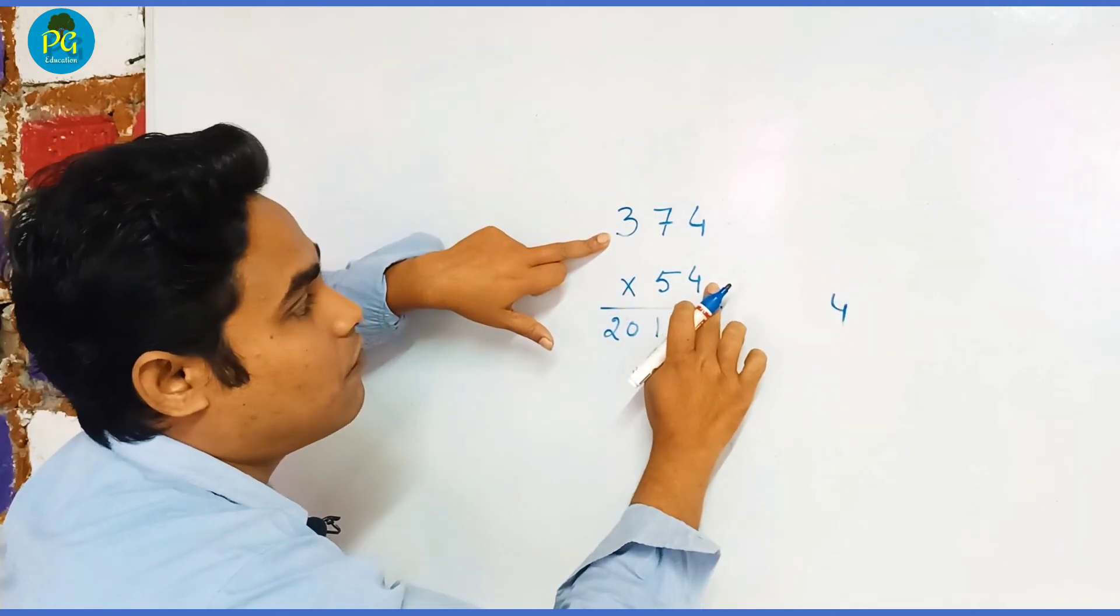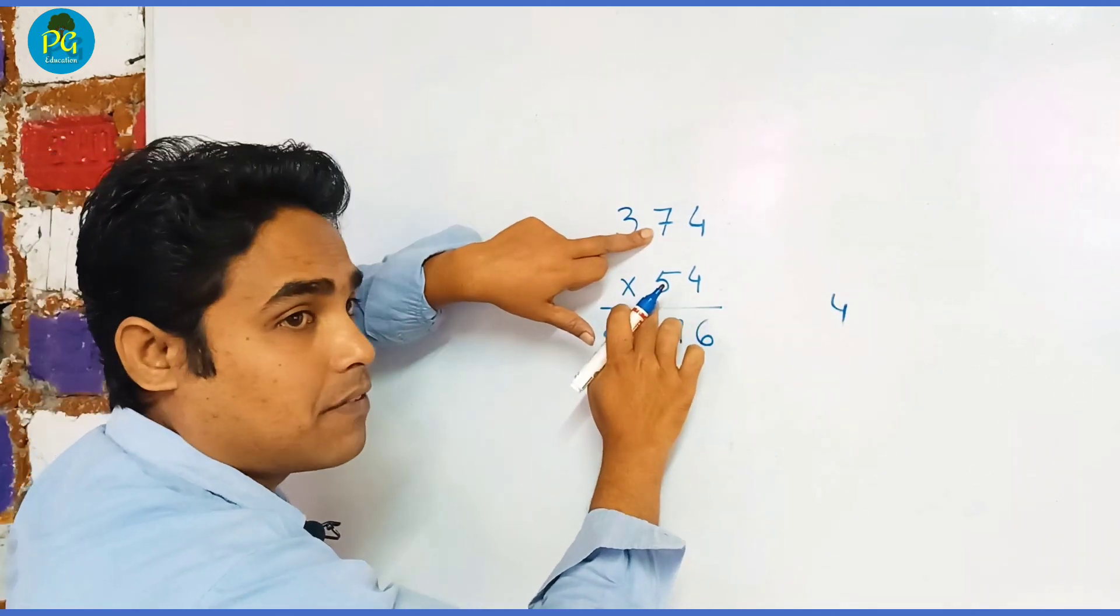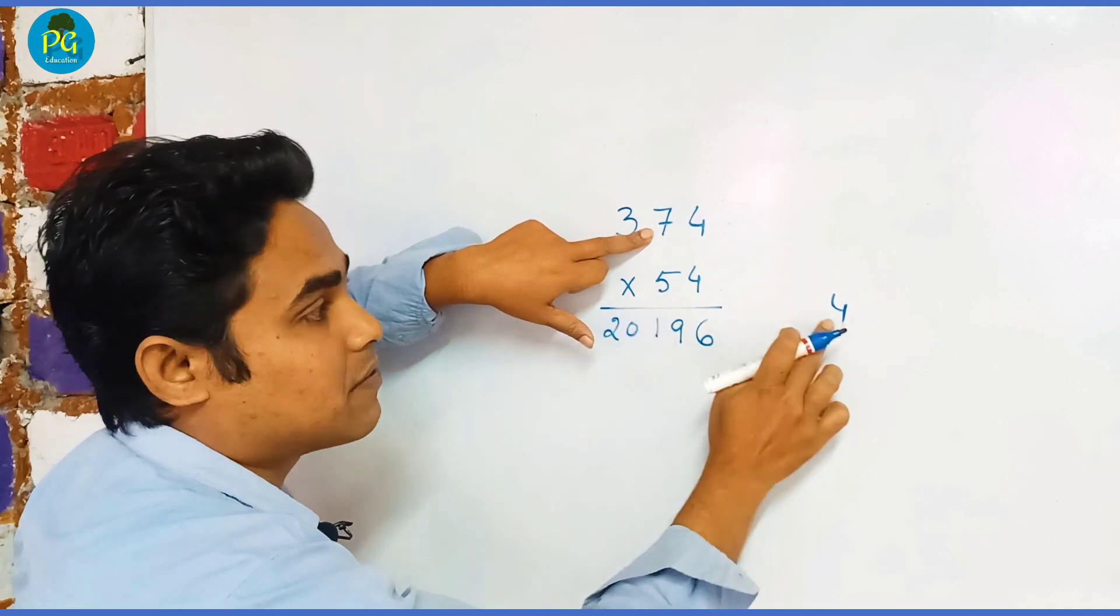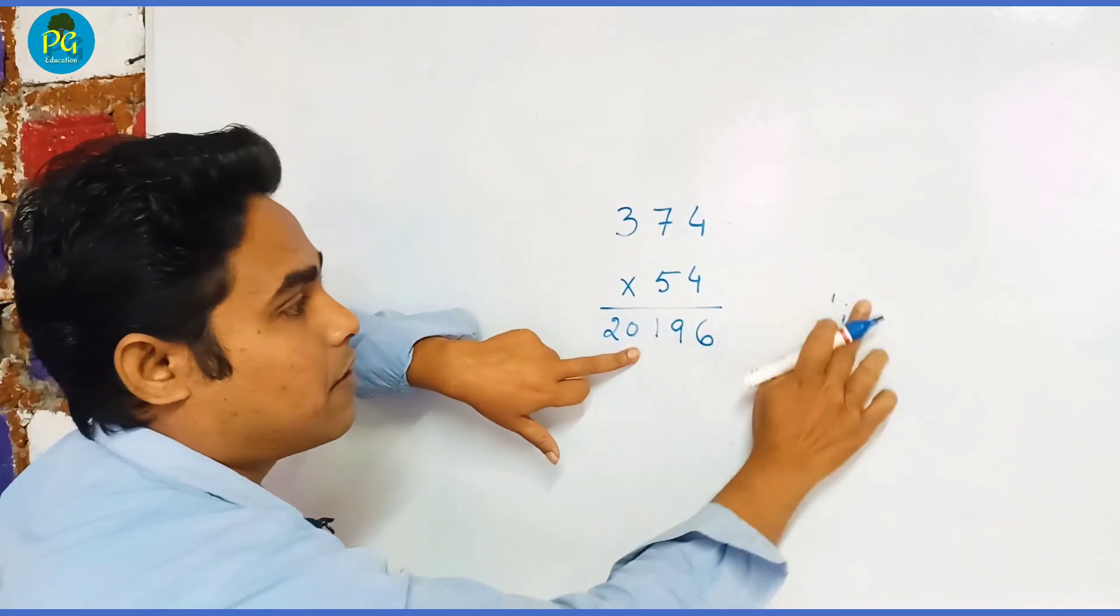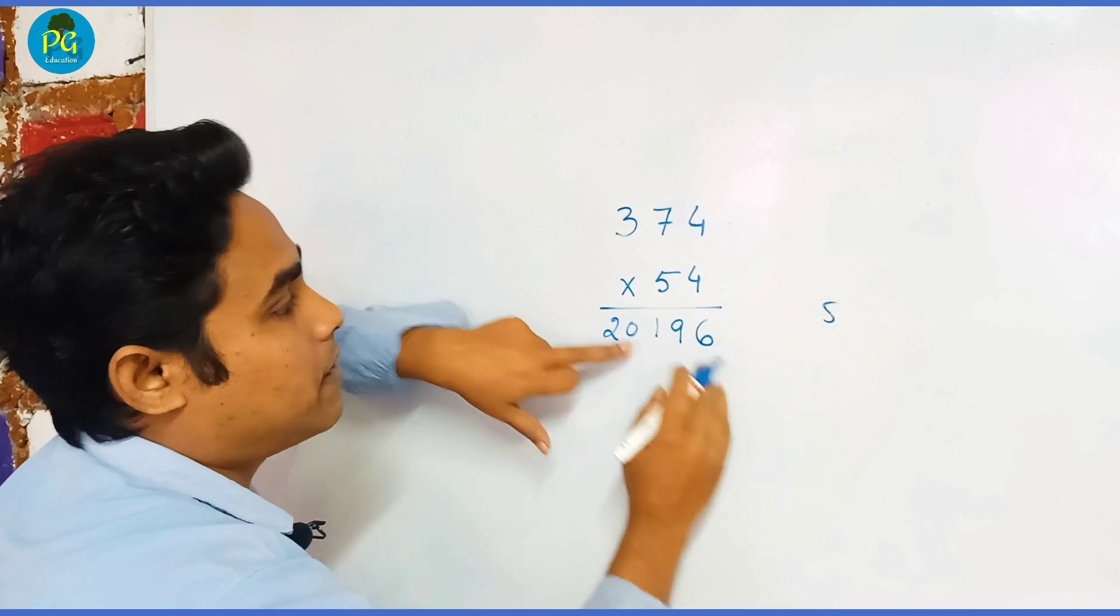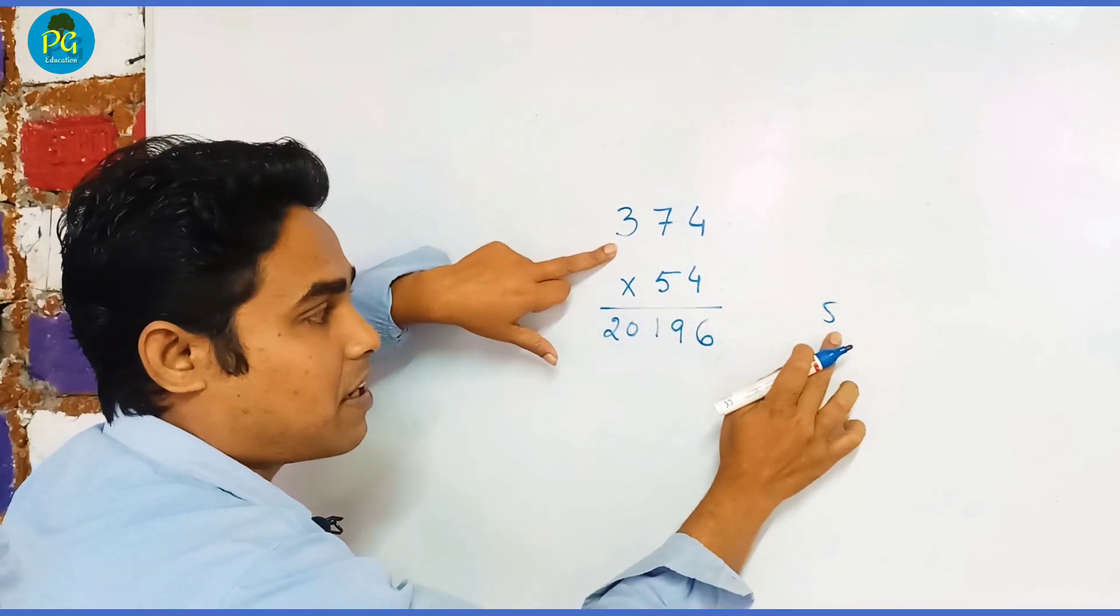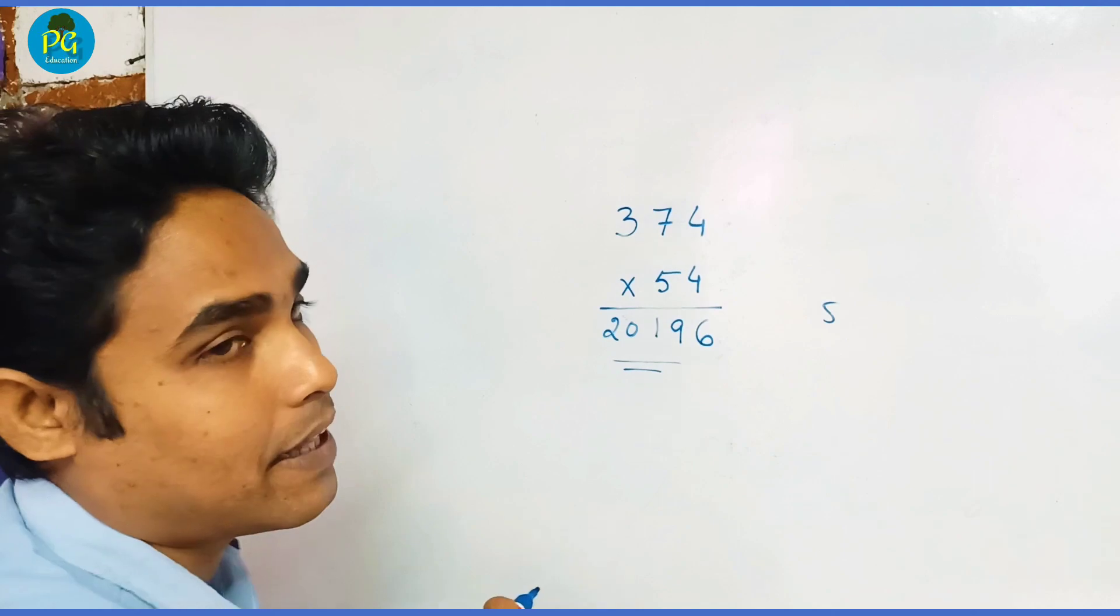Then 4 × 3 = 12 plus 7 × 5 = 35, so it is 47 plus 4 = 51, carry 5. Finally, 5 × 3 = 15 plus 5 = 20. So 20196 is the required answer. I hope you understand.